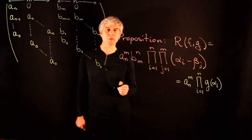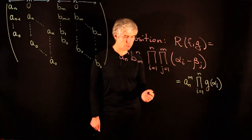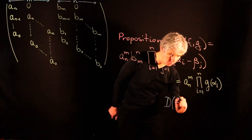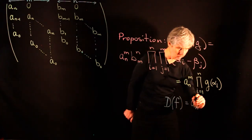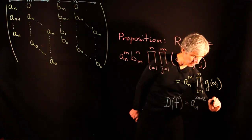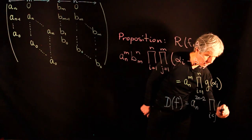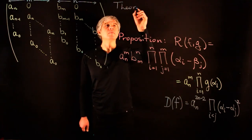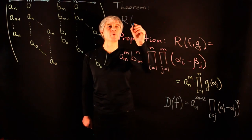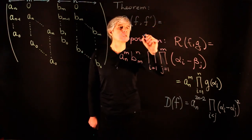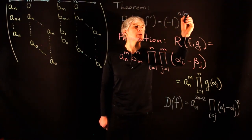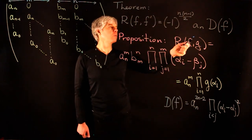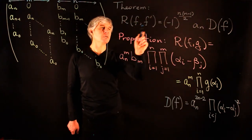Next, let us see how to use resultants to compute the discriminant. For non-monic polynomials, the discriminant is Δ(f) = a_n^{2n-2} · ∏_{i < j} (α_i − α_j)^2. We state the following theorem: the resultant of f with its derivative f' equals (−1)^{n(n-1)/2} · a_n · Δ(f). In this way we can compute the discriminant using the resultant of f and f'.